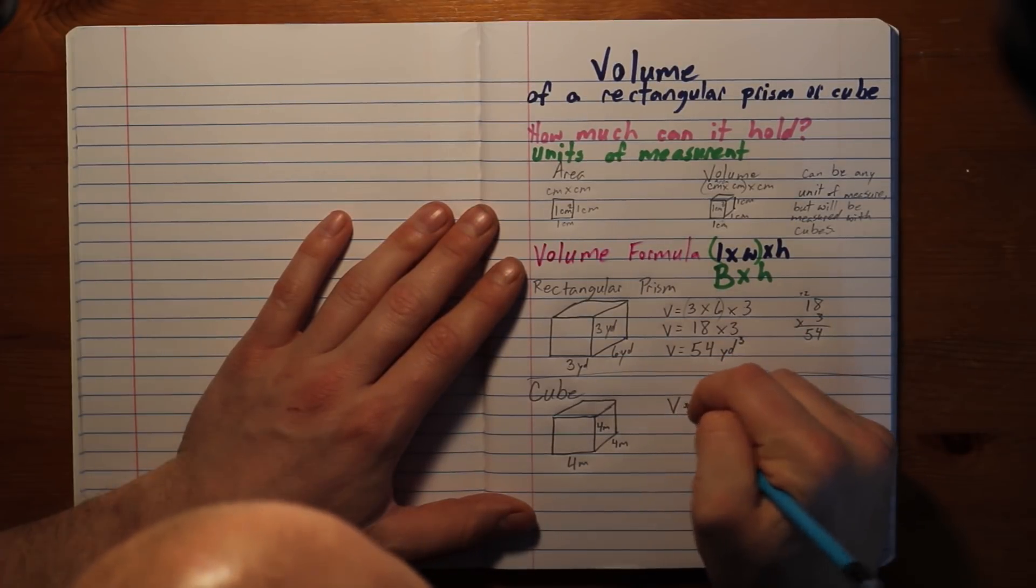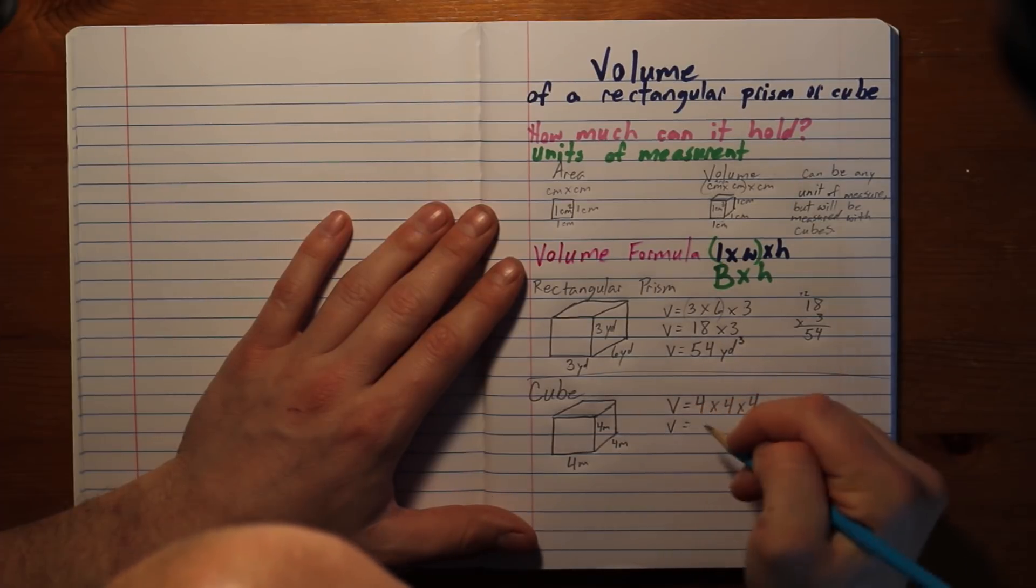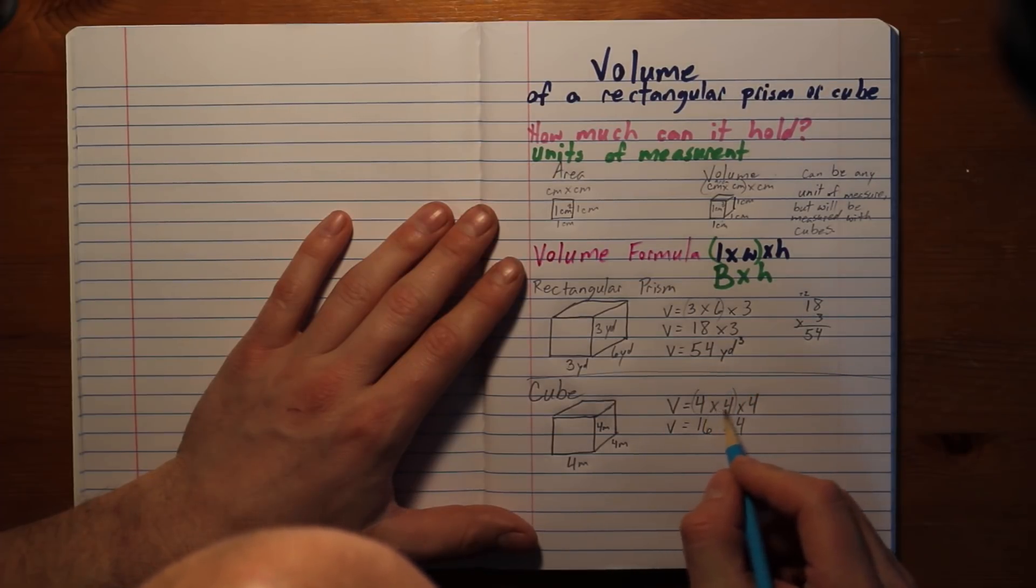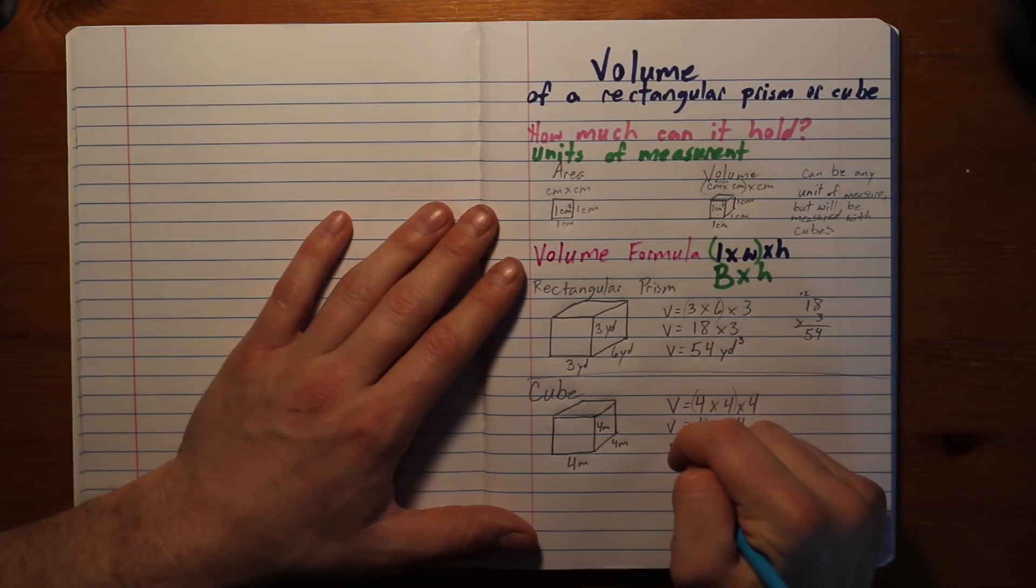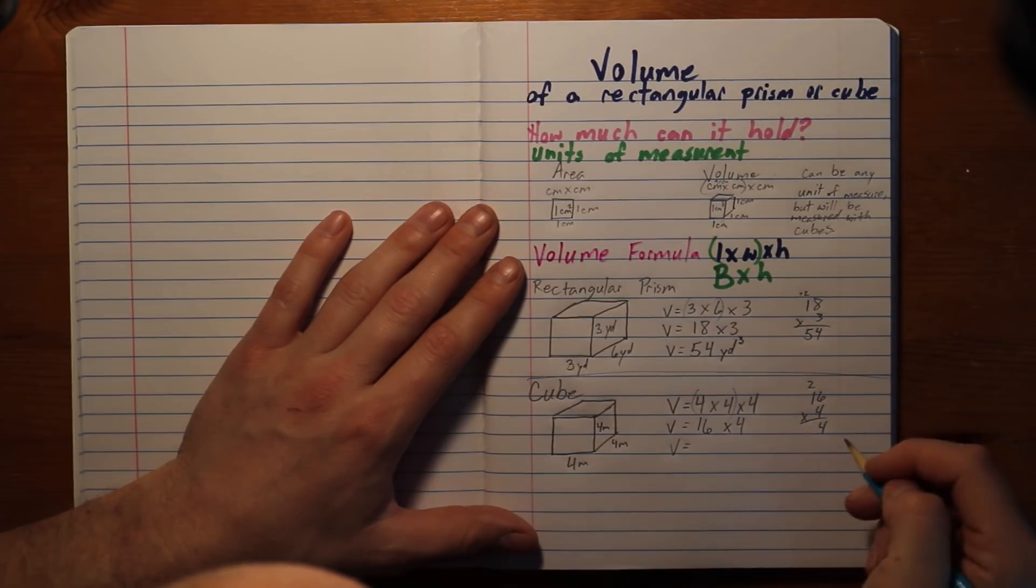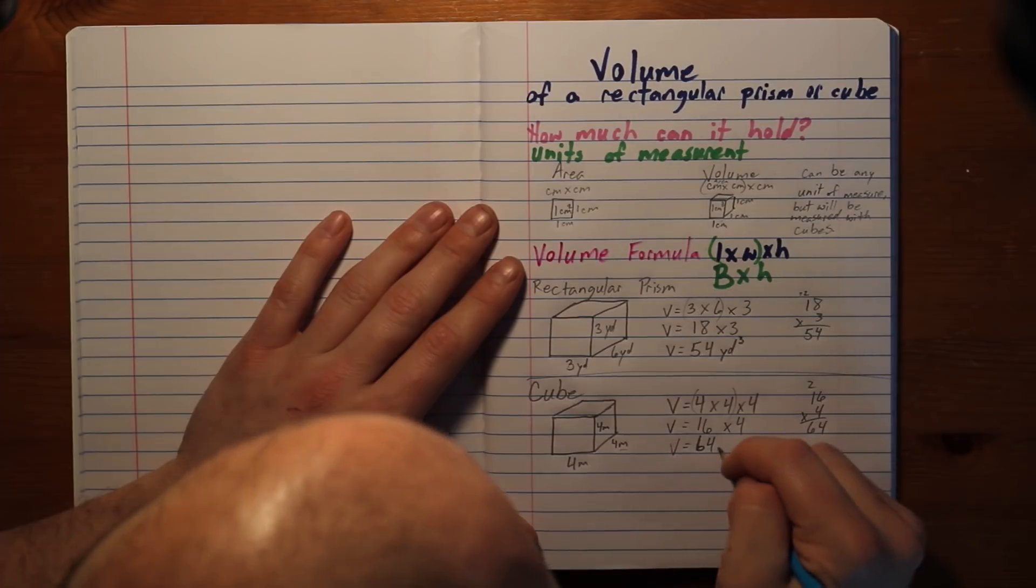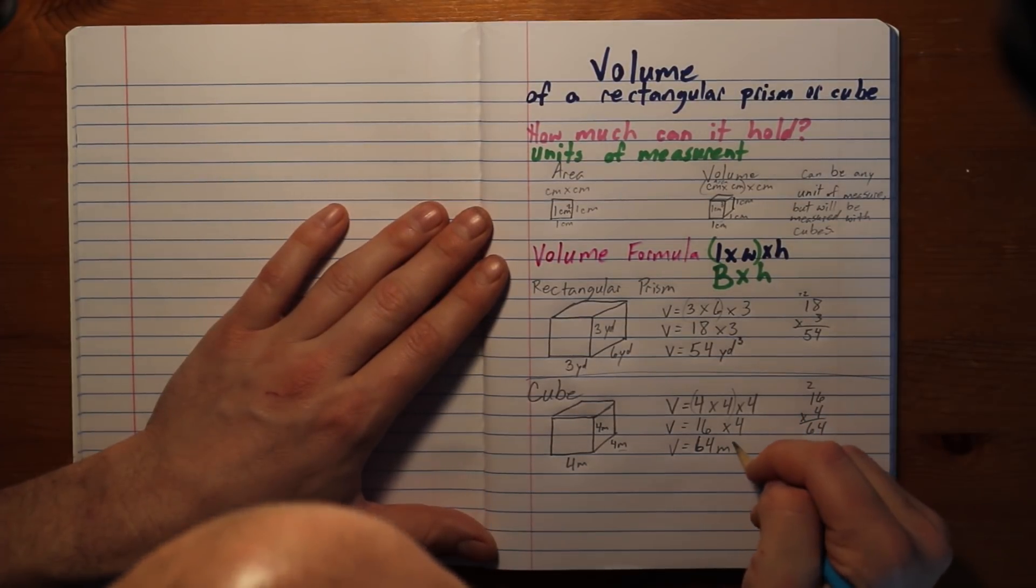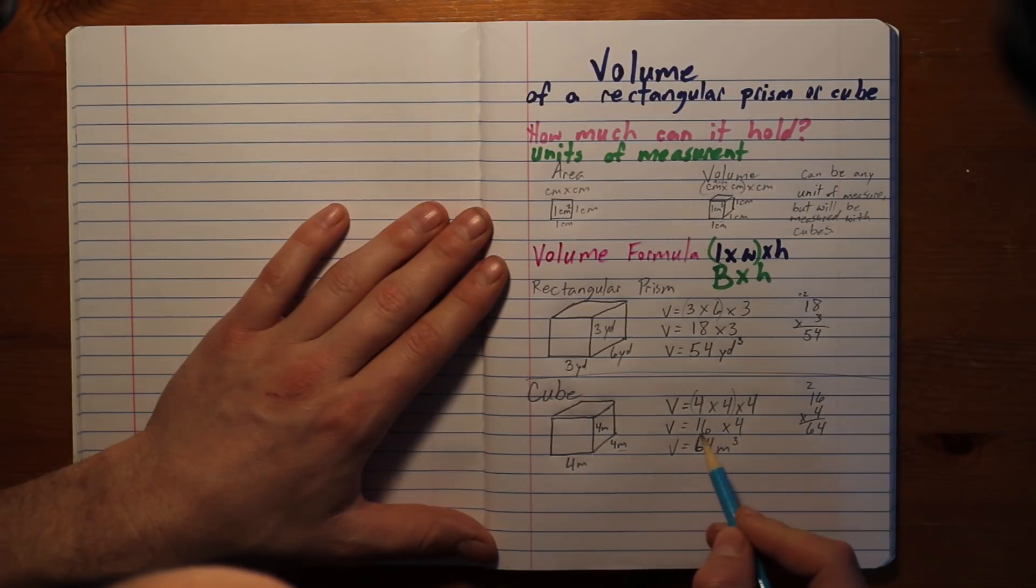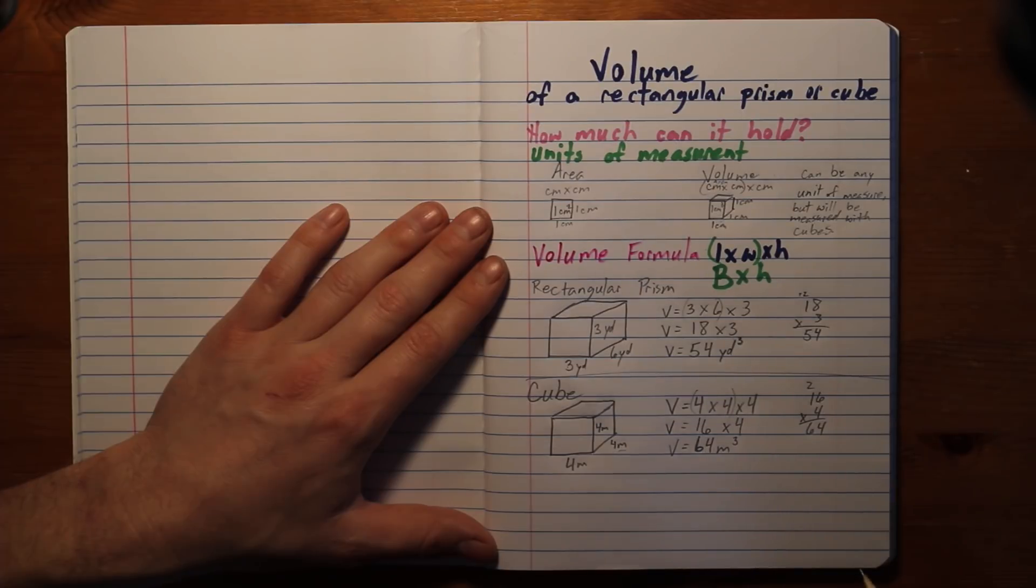Same basic formula. We have our volume, which will be four times four times four, or it could be my base, which is four times four is 16 times four. So my area, or the base, area of the base, times the height. How many layers is it? So 16 times four. Four times six is 24. Four times one is four, plus two is six. So it'd be 64. Don't forget my unit of measurement, which is meters. 64 cubic meters. So that's just 64 of those little cubes inside there. The bottom layer has 16 cubes. It takes 16 of those cubes to make up the bottom layer. And we have four layers, making 64 in total.